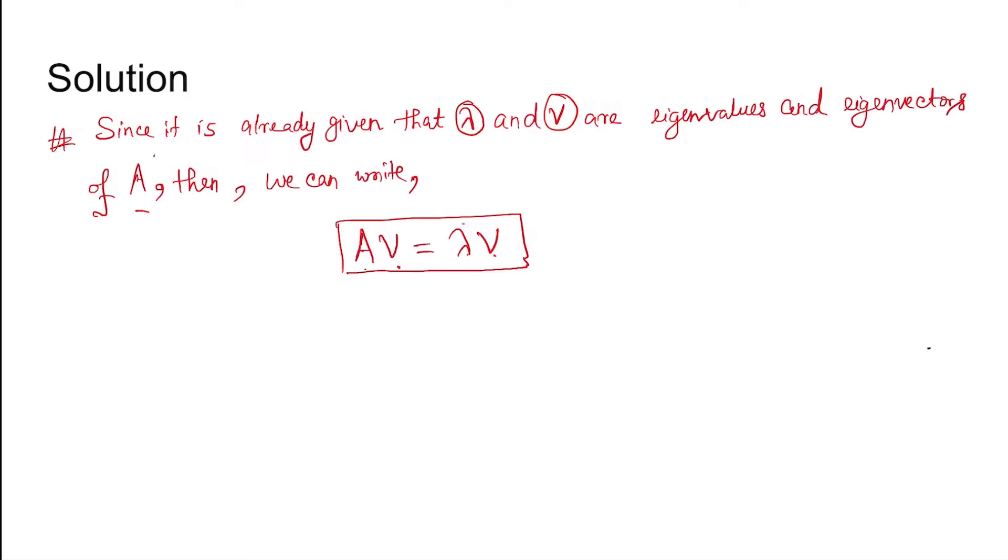Now, E to the power A equals using the series expansion 1 plus A plus A square by 2 factorial plus A cube by 3 factorial and so on.